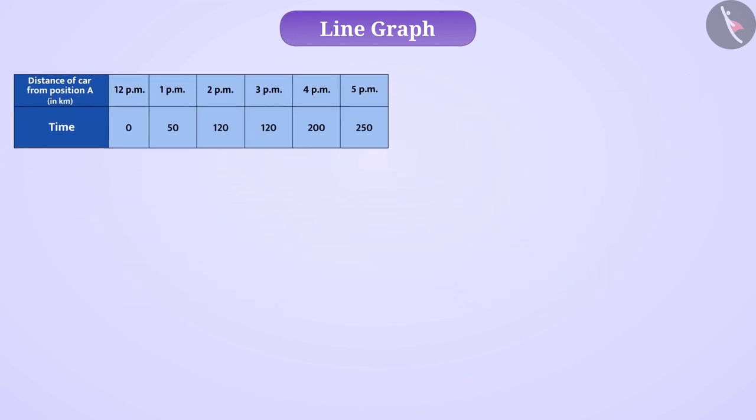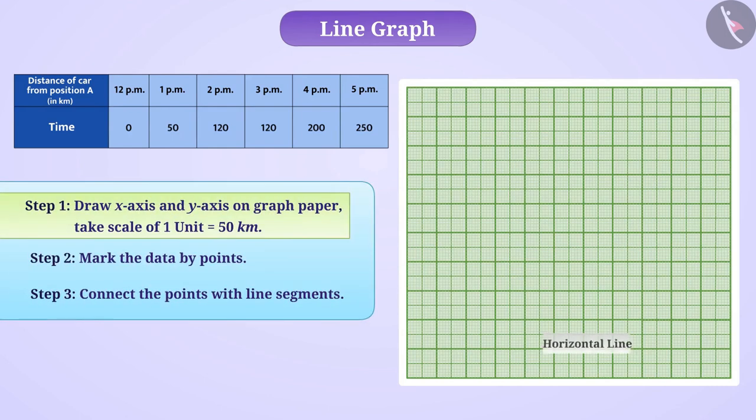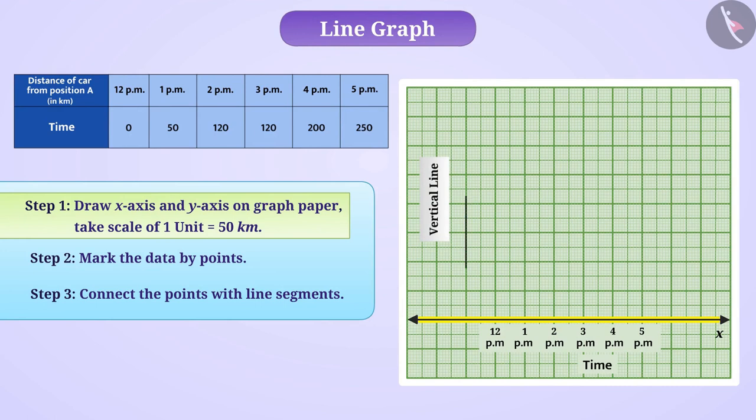We will take a graph paper. On this, a horizontal line will be drawn which is called the x-axis. We will show the time on the x-axis. Similarly, we will draw a vertical line which is also called the y-axis. On this, we will mark the distance of the car from position A.